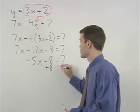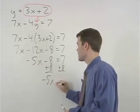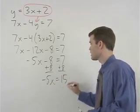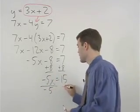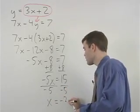Add 8 to both sides and negative 5x equals 15. Divide both sides by negative 5 and x equals negative 3.